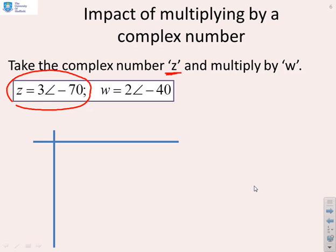First of all, let's mark z down. Let's make that point there z, which equals 3 arg minus 70. And we want to know what's the impact of multiplying by w, which is 2 arg minus 40.